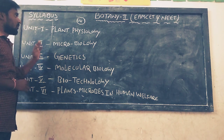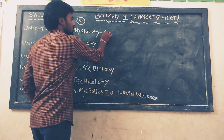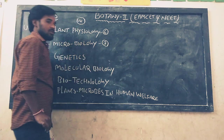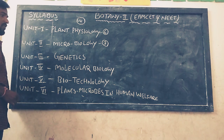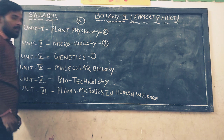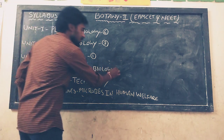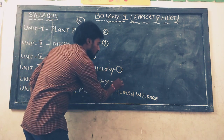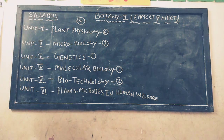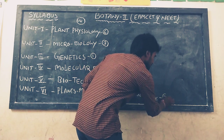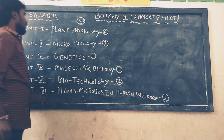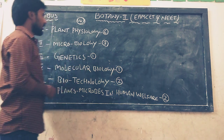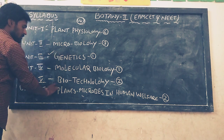In the first unit, plant physiology contains 6 chapters. The second unit, microbiology, contains 2 chapters. The third unit, genetics, contains only 1 chapter. The fourth unit, molecular biology, also contains only 1 chapter. The fifth unit, biotechnology, contains 2 chapters. And the last unit, plants and microbes in human welfare, contains 2 chapters.